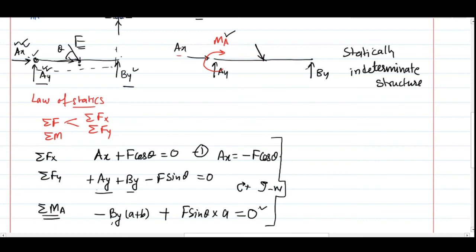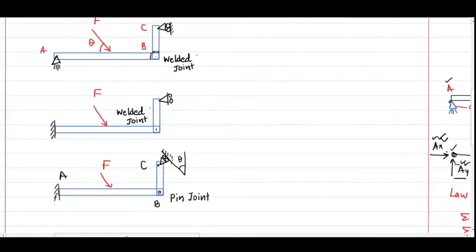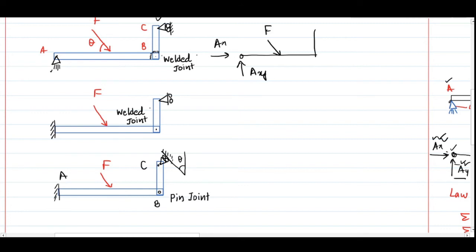Let's solve three practice problems by making free body diagrams only — without solving the equations. In the first case, there is an external force F on a bent bar with a roller joint and a pin joint. Joint A is a pin joint, so there are only two forces — Ay and Ax — with no moment. Joint C is a roller joint, so the reaction Cx is perpendicular to the roller motion. This gives three unknowns — a statically determinate problem.